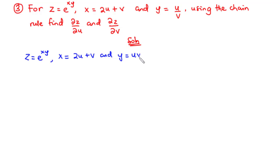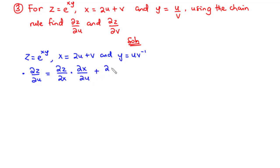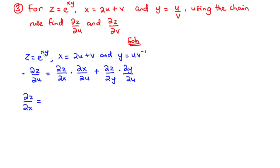First, we are going to find the partial derivative of z with respect to u. We move from z to x, then from x to u, plus we move from z to y, then from y to u. To find the partial derivative of z with respect to x, we differentiate e to the power xy with respect to x. Differentiating x gives 1, so 1 times y is y, giving us y times e to the power xy.